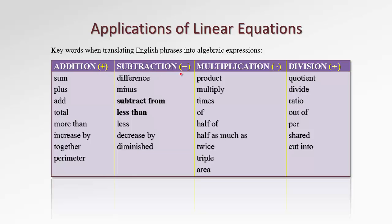The four basic operations are addition, subtraction, multiplication, and division. The result of addition is called sum. The result of subtraction is a difference. The result of multiplication is a product. And the result of division is called quotient.